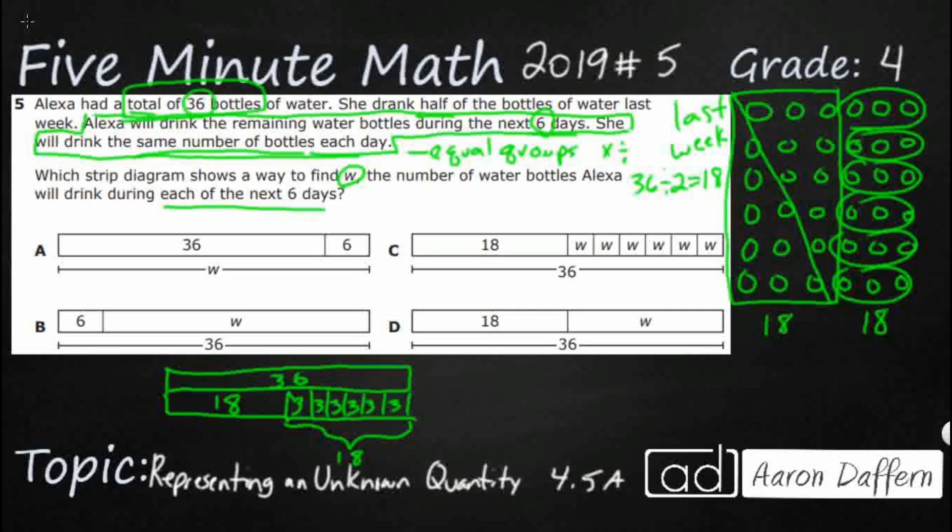So which of these strip diagrams best represents what we've already worked out here? Well, I can already tell you A is going to be wrong because this 36 is not the total. Now they put their total down below. That's fine. We put ours up on top, but that 36 needs to be your total.